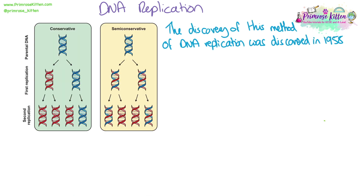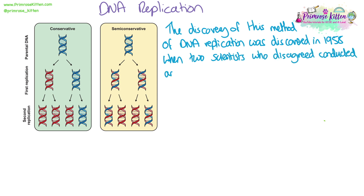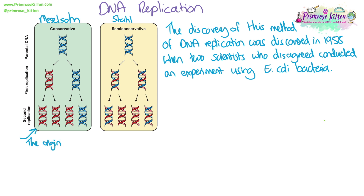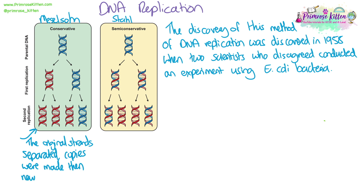We need to know how this method of DNA replication was discovered. It was discovered in 1958 when two scientists disagreed about how DNA replication occurred. They conducted an experiment using E. coli bacteria. Stahl believed semi-conservative replication takes place, whereas Meselson believed replication was actually conservative — in his theory, the original strands would separate, copies would be made, but the two new strands would rejoin and the two original strands would rejoin, so there would be no mixing of old and new strands.